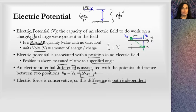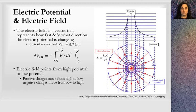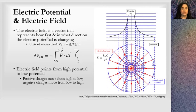I also prepared a more mathematical way to think about electric potential in reference to electric fields. This is the proper definition — it deals with vector calculus to find a potential difference, and again we have this dependence on the electric field. The electric field is a vector that represents how fast and in what direction the electric potential is changing.